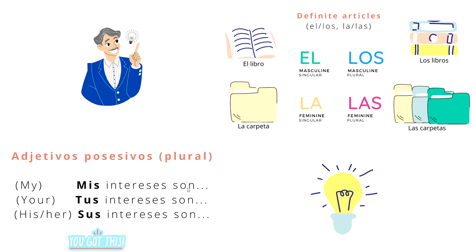And if you want to say, for example, 'your hobbies are' — tus intereses son — or his or her hobbies — sus intereses son. But this is just a preview. We're going to focus only on the first person — in this case, I, or you. So, mis intereses son.